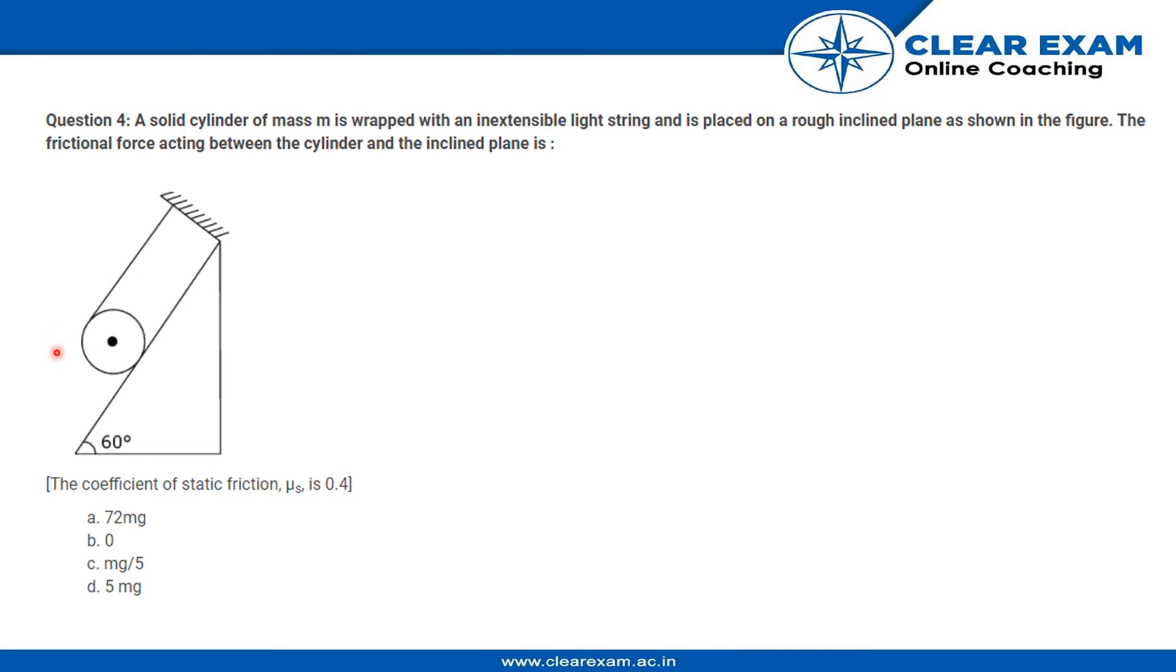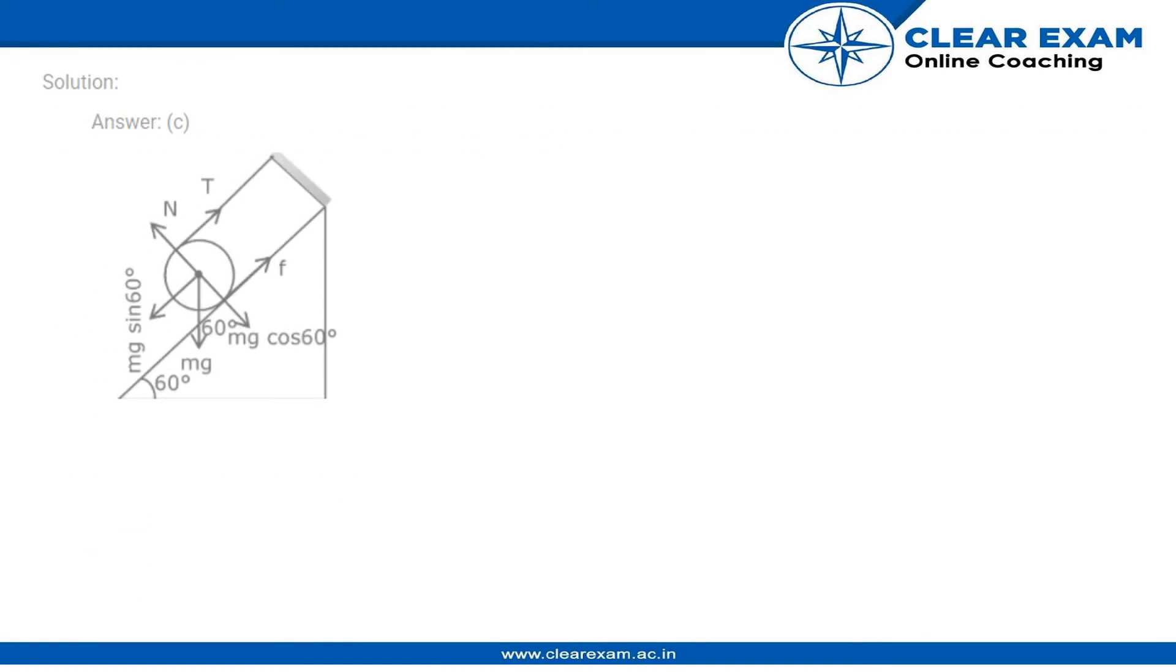So we have the FBD of the diagram over here. There is mg which has two components: mg cos 60° and mg sin 60°. There is tension acting on the string, there is frictional force acting in this direction, and there is normal force.